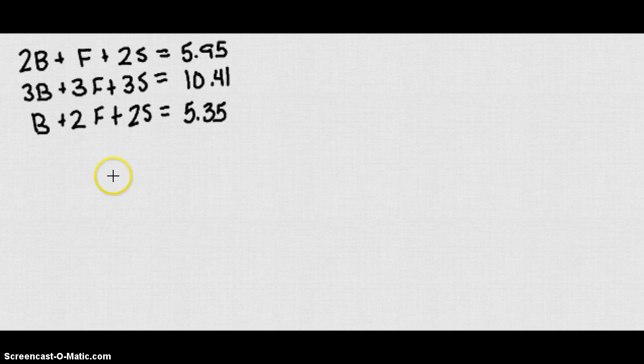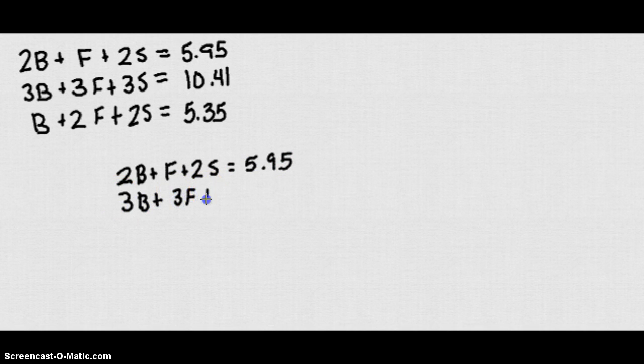So what I want to do is I'm going to take the first two equations, write them out this way. 2B plus F plus 2S equals 5.95, and 3B plus 3F plus 3S equals 10.41. Not necessarily an easy way to eliminate those ones. So we can consider using one of these variables as a lowest common multiple. We can either do B, F, or S. I'm going to choose F since if I multiply this by 3, I'm only going to have to multiply one equation.